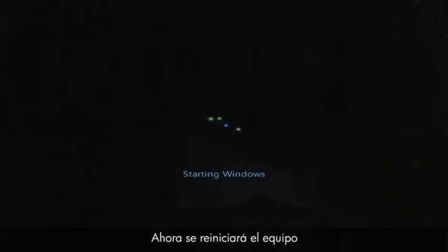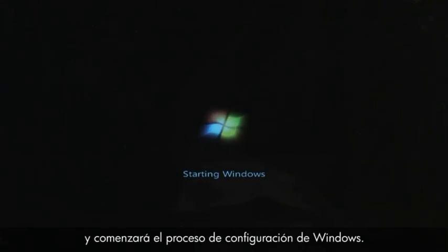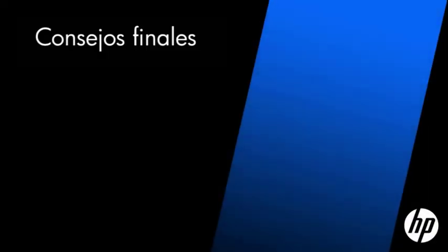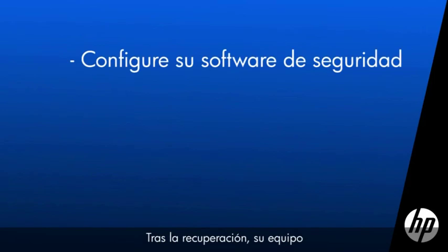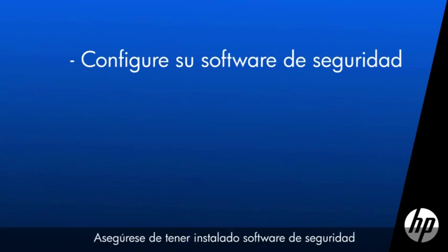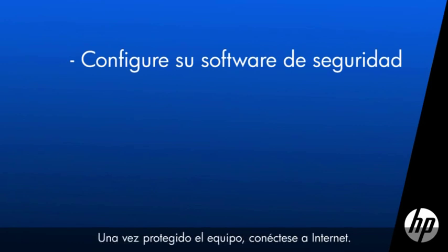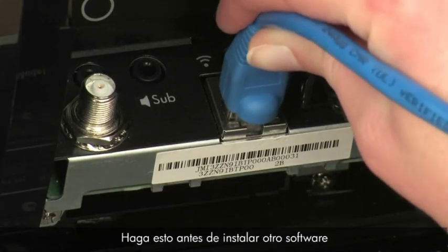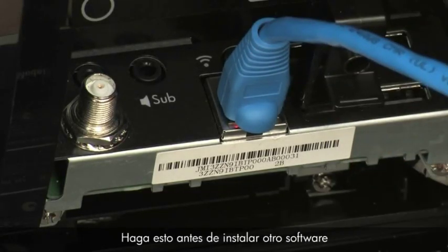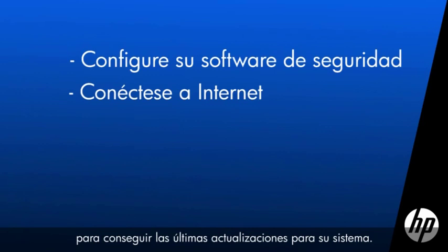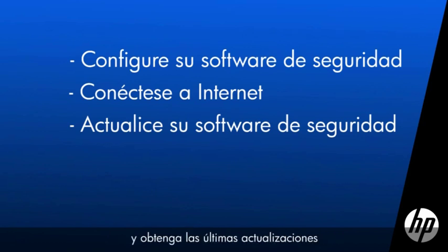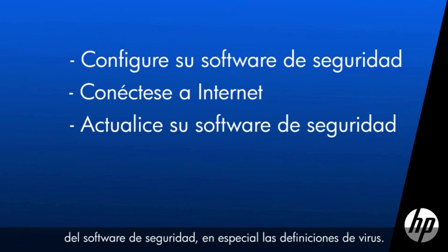Now, the computer will restart and begin the Windows setup process. After recovery, your computer is more vulnerable to security threats. Make sure you have security software installed before connecting to the Internet. Once your computer is secure, connect to the Internet. Open your computer software in order to get the latest updates to your system. After connecting, open your security software and get the latest updates, especially updates to virus definitions.